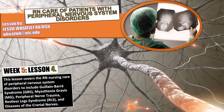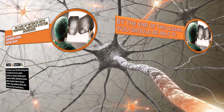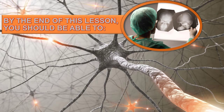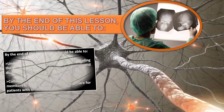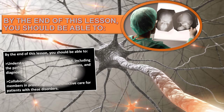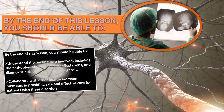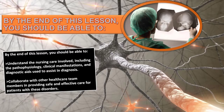Acquired neuropathies are grouped into three broad categories: the inflammatory neuropathies, the traumatic neuropathies, and the systemic neuropathies. By the end of this lesson, you should be able to understand the nursing care involved including the pathophysiology, clinical manifestations, and diagnostic criteria to assist in diagnosis of diseases of the peripheral nervous system, and collaborate with other healthcare team members in providing safe and effective care.